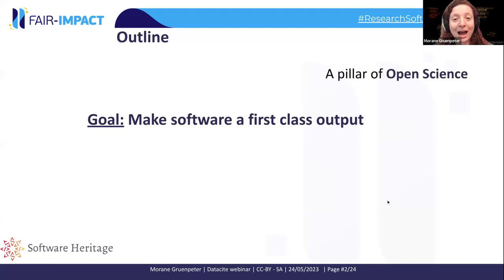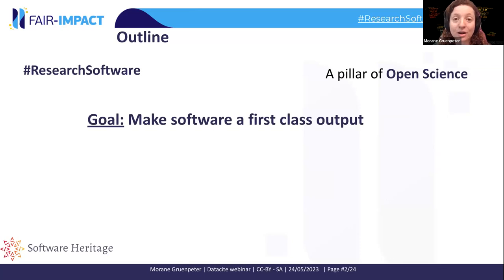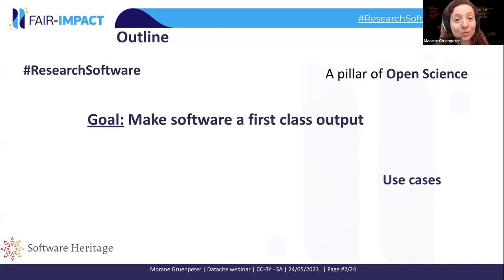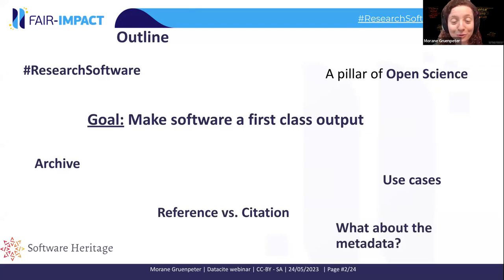First, we will look at software as a pillar of open science. We'll discuss research software and define what software is and what research software is, and how it is different from data. We'll see a few use cases where researchers need to work with research software. We will discuss archive, reference versus citation. And I will touch briefly on the metadata.